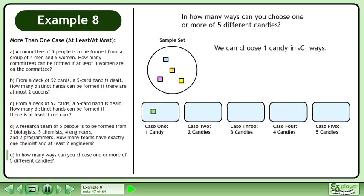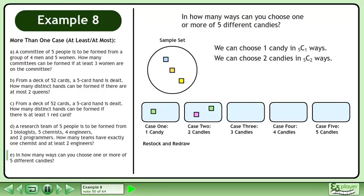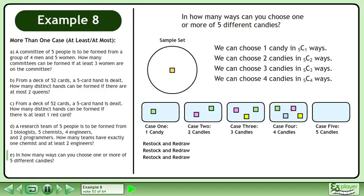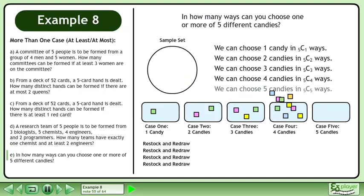We can choose 1 candy in 5 choose 1 ways, 2 candies in 5 choose 2 ways, 3 candies in 5 choose 3 ways, 4 candies in 5 choose 4 ways, and 5 candies in 5 choose 5 ways. Add the 5 cases to get 31.